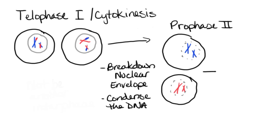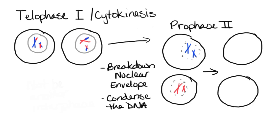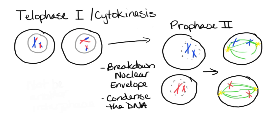After prophase II, we're going to move into prometaphase II. In prometaphase II, we will get the spindles attached to these chromosomes. Drawing the centrosomes in, we've got our chromosomes scattered inside the cell at this moment. The spindles are going to attach to them, and once attached, we'll be able to manipulate and move those chromosomes around inside the cell. A spindle from each side attaches to the different chromosomes.